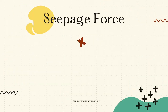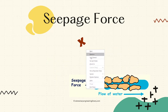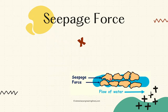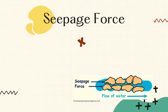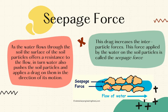Let us define seepage force. These are the soil particles. In between these soil particles are voids in which water can flow. As the water flows through a soil sample, the soil particles offer some resistance to the force of the flowing water. The force applied by the flowing water to the soil particles is what we call the seepage force.